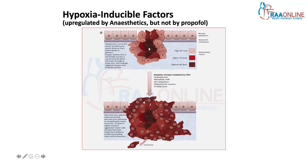In some tumors, as a response to hypoxia or lack of nutrients at the core, the cells upregulate genes which synthesize what we call hypoxia inducible factors. These hypoxia inducible factors make tumor cells resistant to hypoxia and in fact promote the growth of tumor cells even in a hypoxic environment.